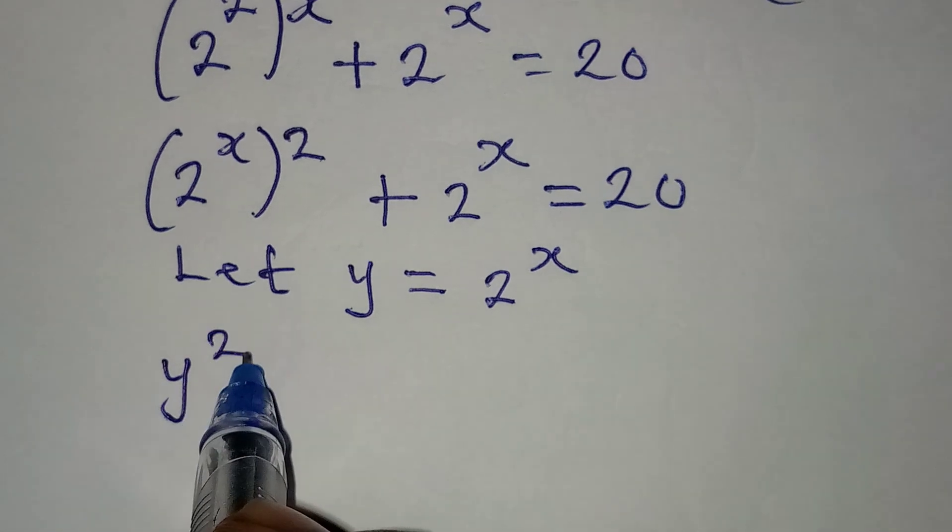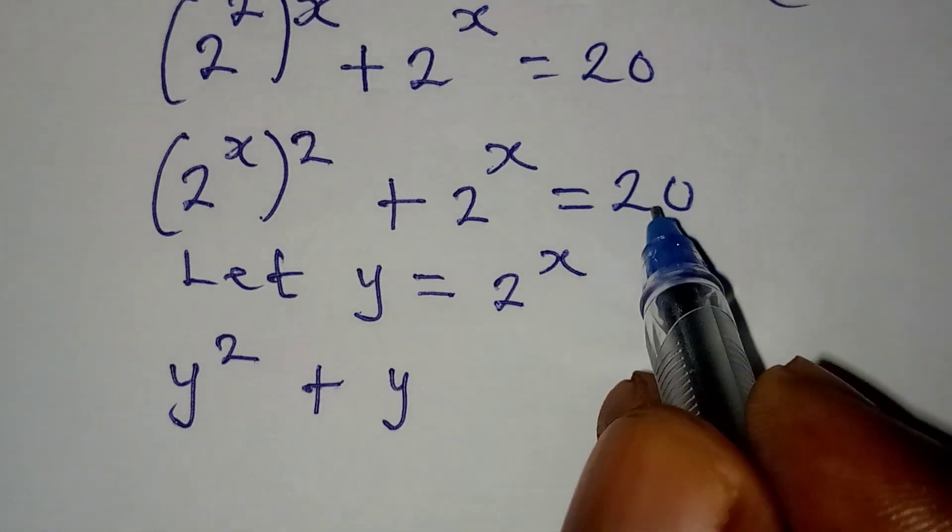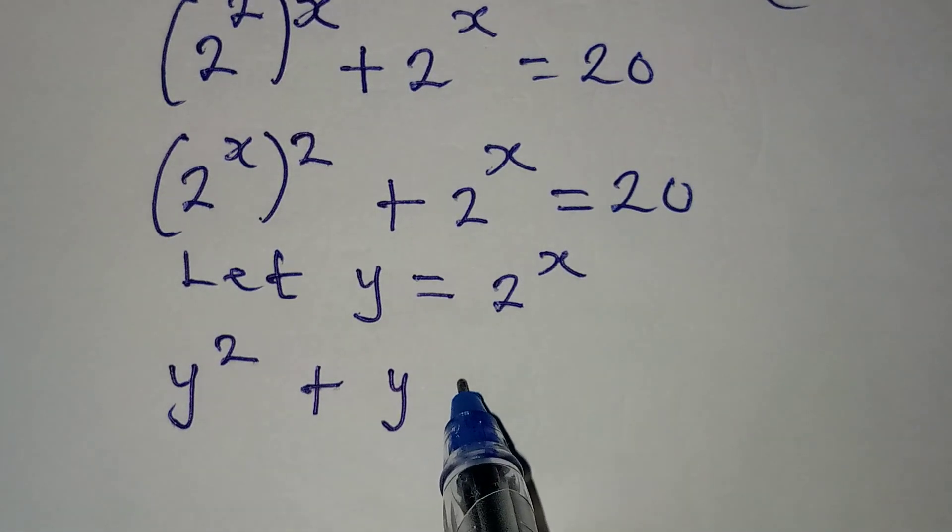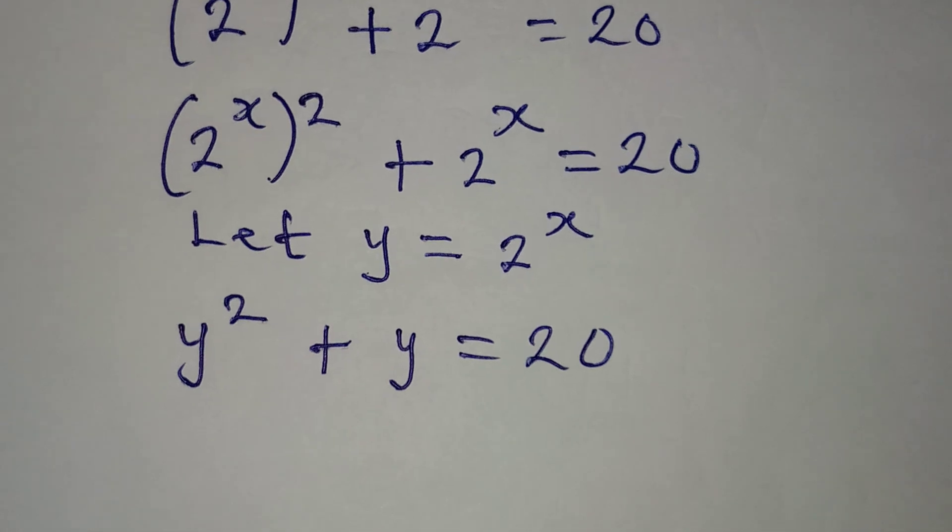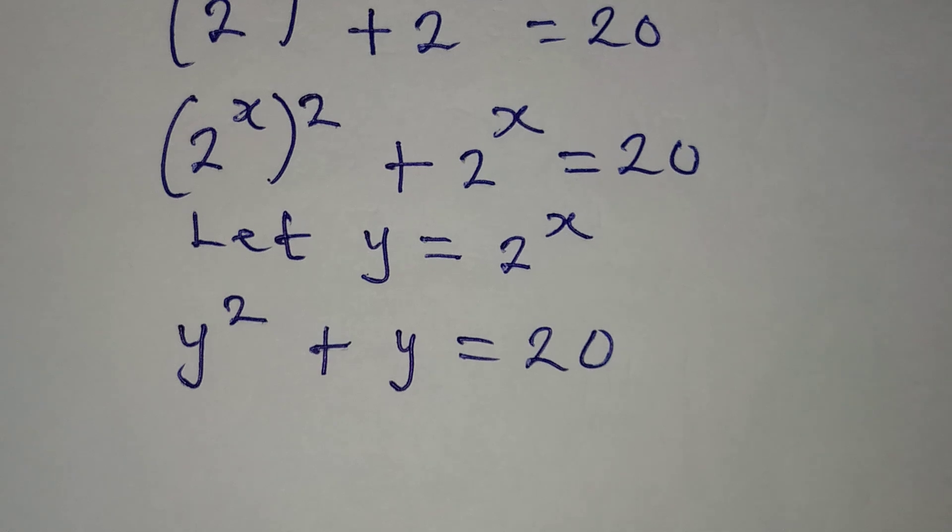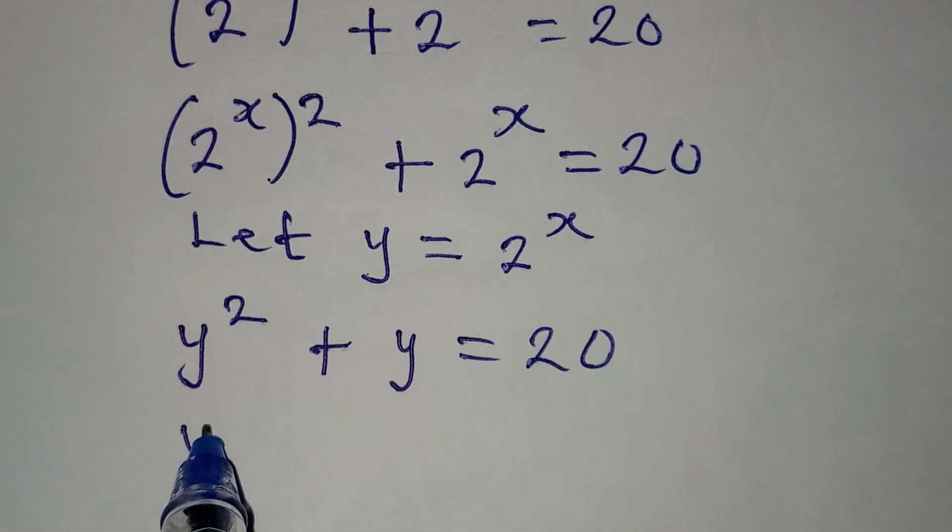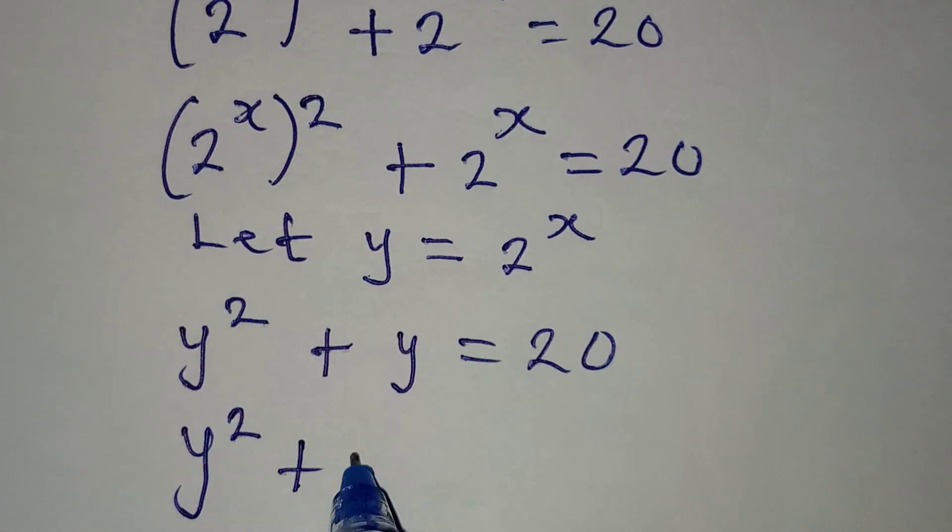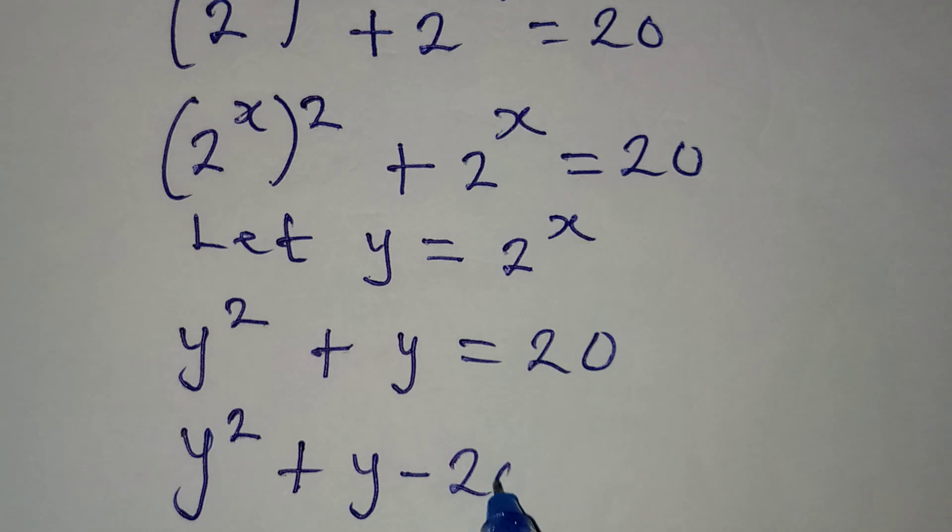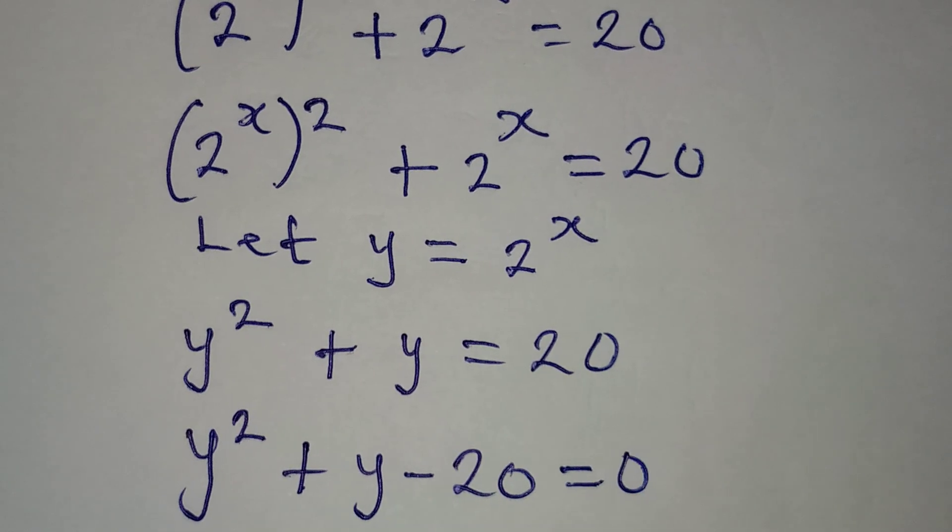Here, I'll have y squared, then plus the whole of this will be y. Then here, we're going to have everything equal to 20. This is a quadratic equation and we can solve this by bringing 20 to the left. So we have y squared plus y minus 20 equals 0.